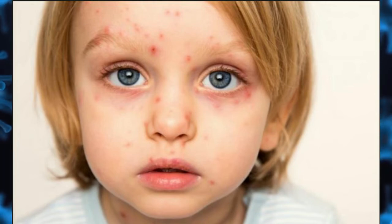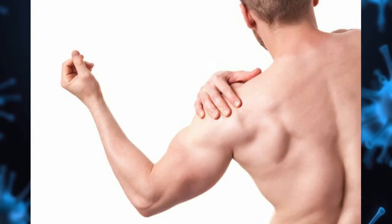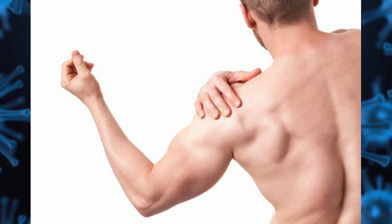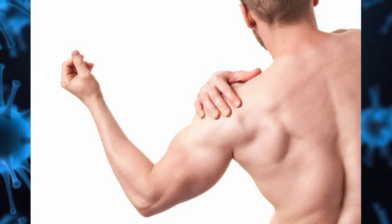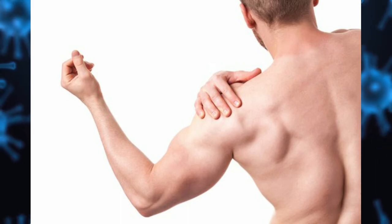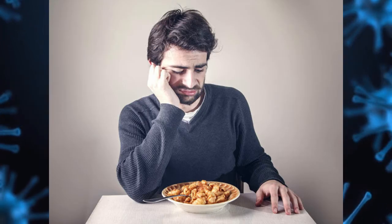Before the rash appears, there will be a general feeling of being unwell, malaise, fever which is usually worse in adults than children, aching muscles, loss of appetite, and in some cases a feeling of nausea. After the rash appears, there will be a rash whose severity varies from a few spots to a rash that covers the whole body. The spots develop in clusters and generally appear on the face, limbs, chest and stomach.